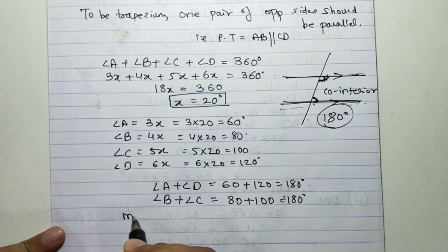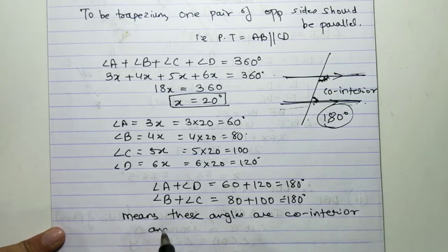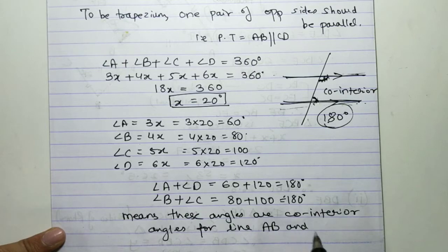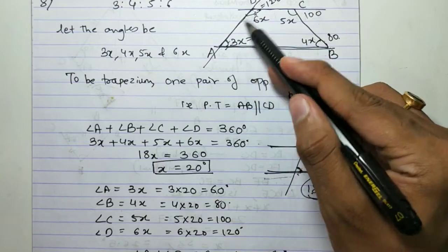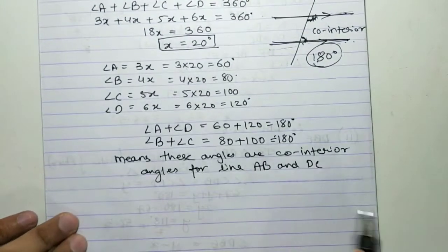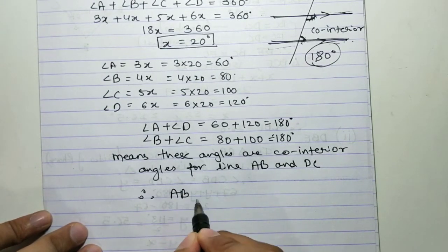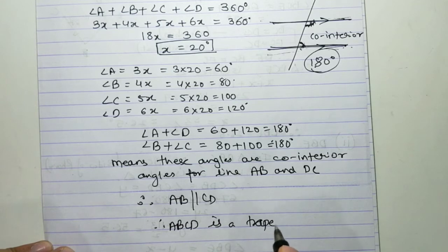These angles are co-interior angles for lines AB and DC. Since their total is 180°, these two lines are parallel to each other. Therefore, AB is parallel to CD.